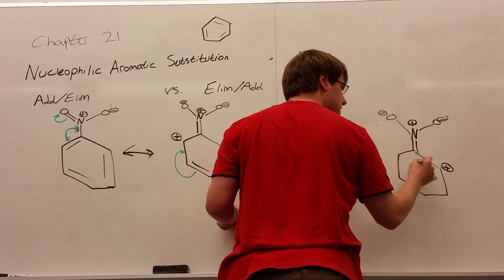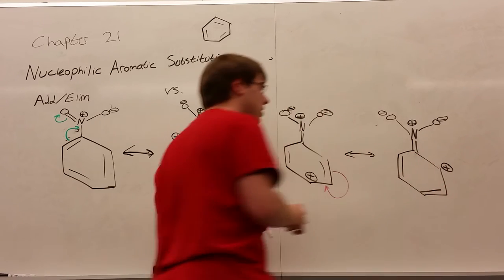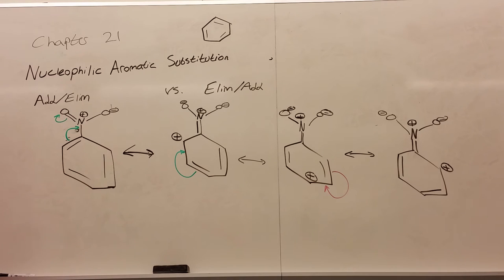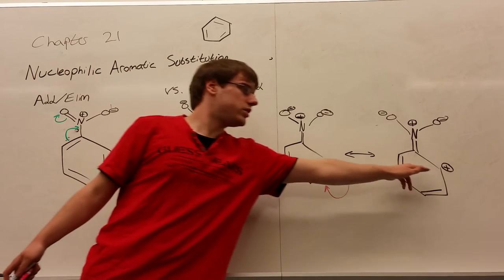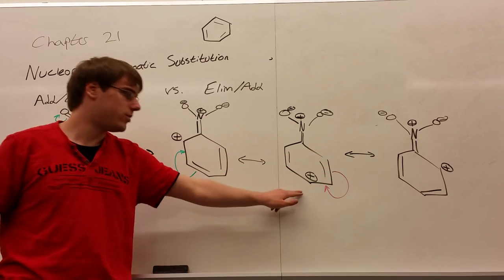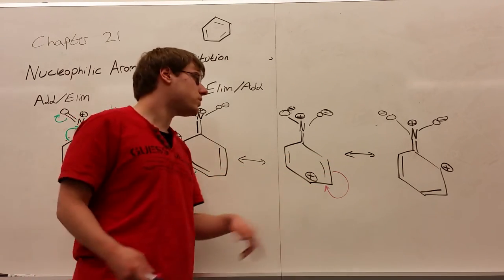So basically, what this should tell you is, whenever you're dealing with addition elimination, whatever nucleophile is coming in is typically going to attack either the ortho positions, because the positive ends up in the ortho, or the para position, where the positive can also end up.